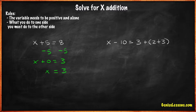Let's try a different one. x minus 10 equals 3 plus 2 plus 3. Our goal is to find the value of x. As we can see, we have two sides.